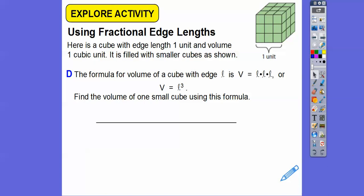So the formula for the volume of the cube with edge L is L times L times L, or L cubed. Find the volume of one of those small cubes. Remember, the side was 1/3, so it's going to be 1/3 times 1/3 times 1/3. And when you're multiplying fractions, multiply the top: 1 times 1 times 1 is 1, 3 times 3 is 9, times 3 is 27, so 1/27th right there.